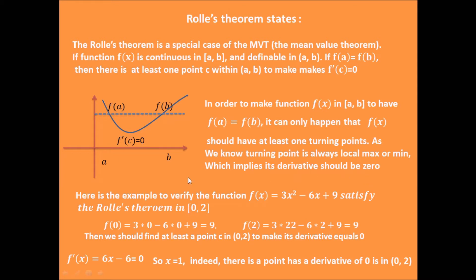Here is the example. If we want to verify the function f(x) = 3x² - 6x + 9, whether or not it satisfies Rolle's theorem in the range [0, 2]. So at first, we just plug x = 0 into this function, and x = 2 into the function to get the corresponding f values. As you can see, f(0) equals f(2).